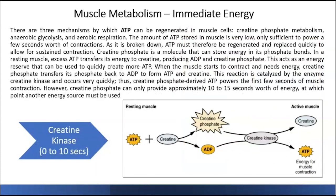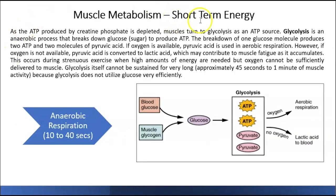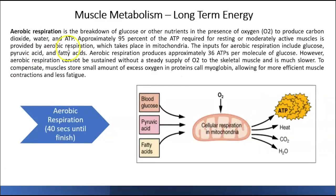The next topic is muscle metabolism — in other words, what do muscles need in order to contract? ATP. Immediate energy from zero to ten seconds is obtained through creatine kinase, which produces ATP for the first ten seconds. The next is short-term energy, from ten to forty seconds, through anaerobic respiration — specifically glycolysis — which produces two ATPs. Long-term energy, from forty seconds until you finish running, comes from aerobic respiration, which produces thirty-six ATPs.